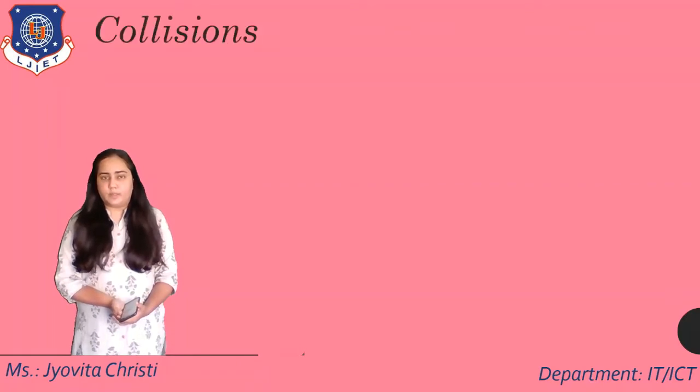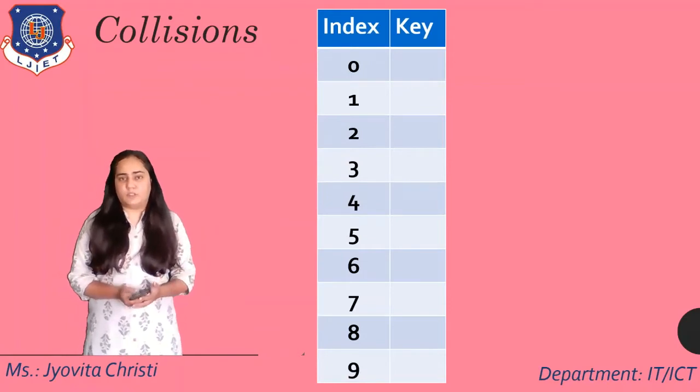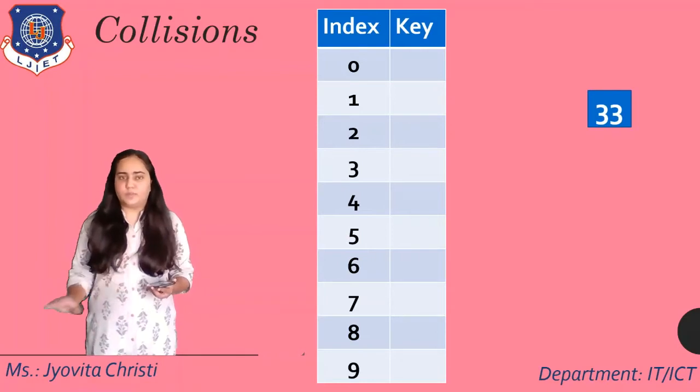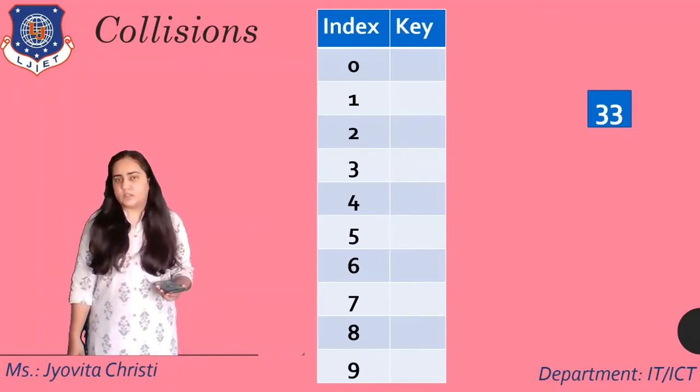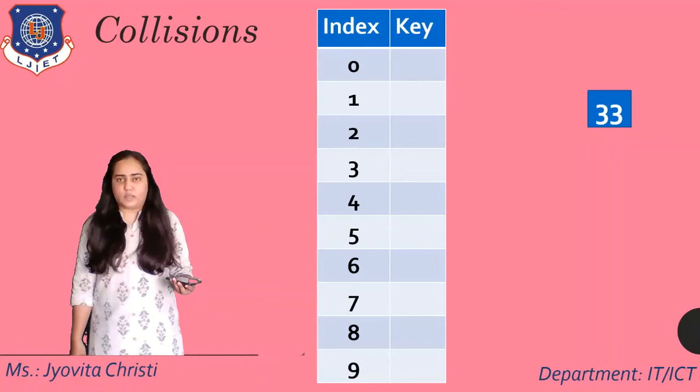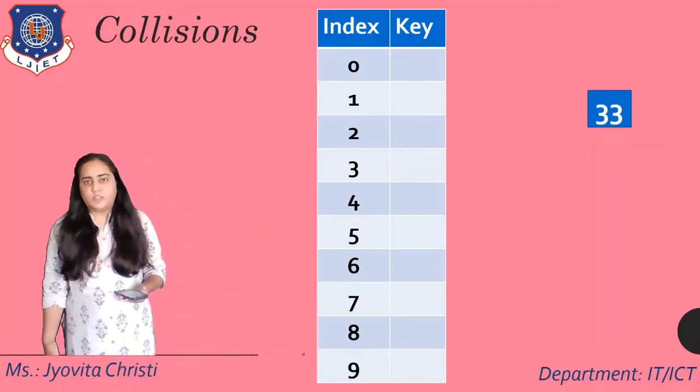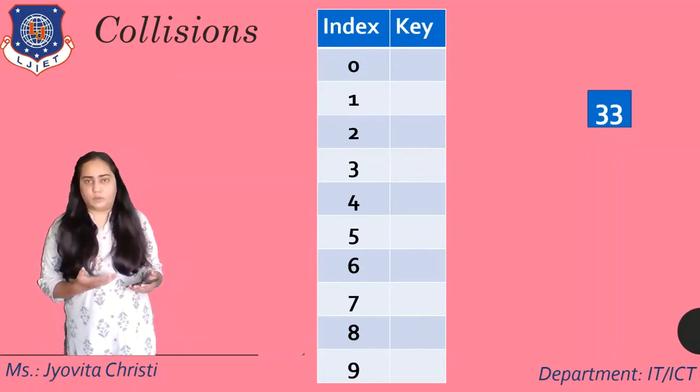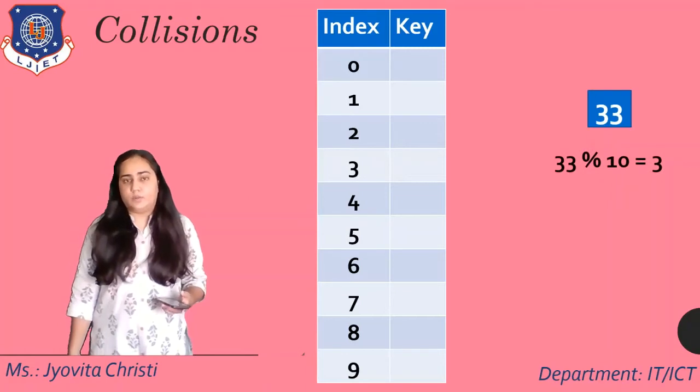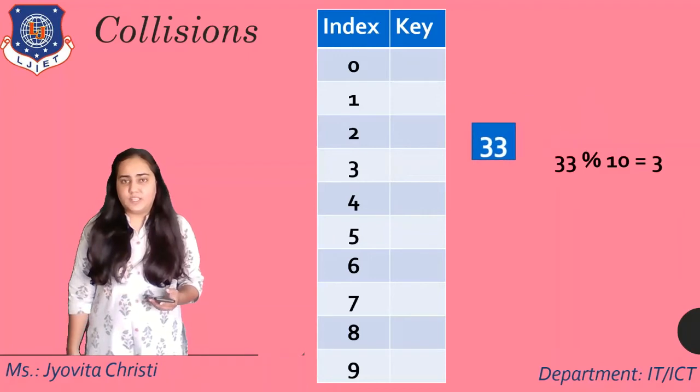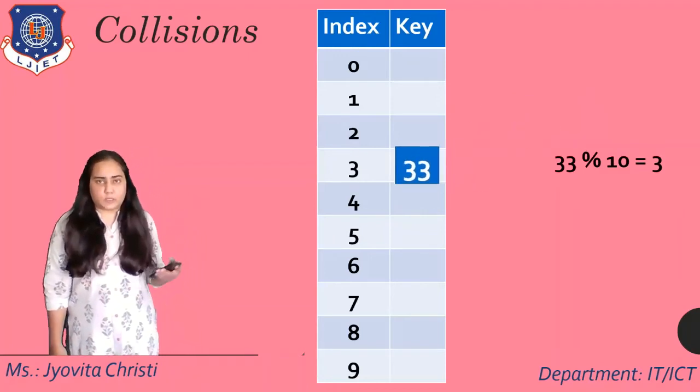Now we are going to see a problem that can happen in a hash table, which is called collisions. So let's take a hash table of size 10. And now I'm going to use for all these purposes, the division method, because that's the easiest one. And because the size is 10, I just have to worry about the last digit of my key. So 33 is the key that I want to store. Which means I'm going to do 33 modulo 10, which gives me three. And so 33 will get stored in the bucket three.